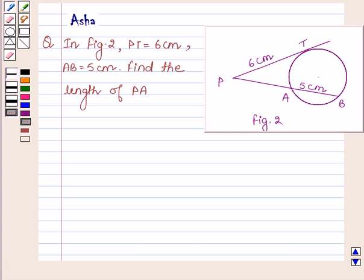Hello and welcome to the session. The given question says, in figure 2, PT is equal to 6 cm, AB is equal to 5 cm, find the length of PA.